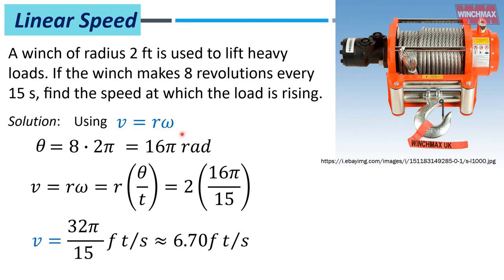We can also use the formula: linear speed equals radius times angular speed. Theta is 8 times 2 pi equals 16 pi radians from 8 revolutions. Linear speed v equals r times (theta over t): radius is 2 feet, theta is 16 pi radians, and time is 15 seconds — yielding the same answer. It doesn't matter which method you use; what matters is being very conscious of the given and choosing the best method.